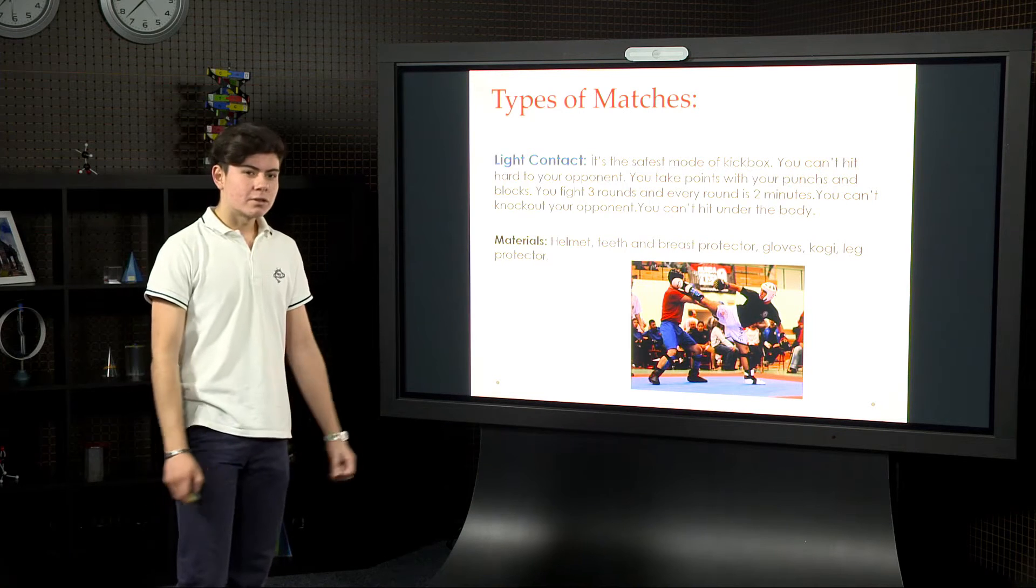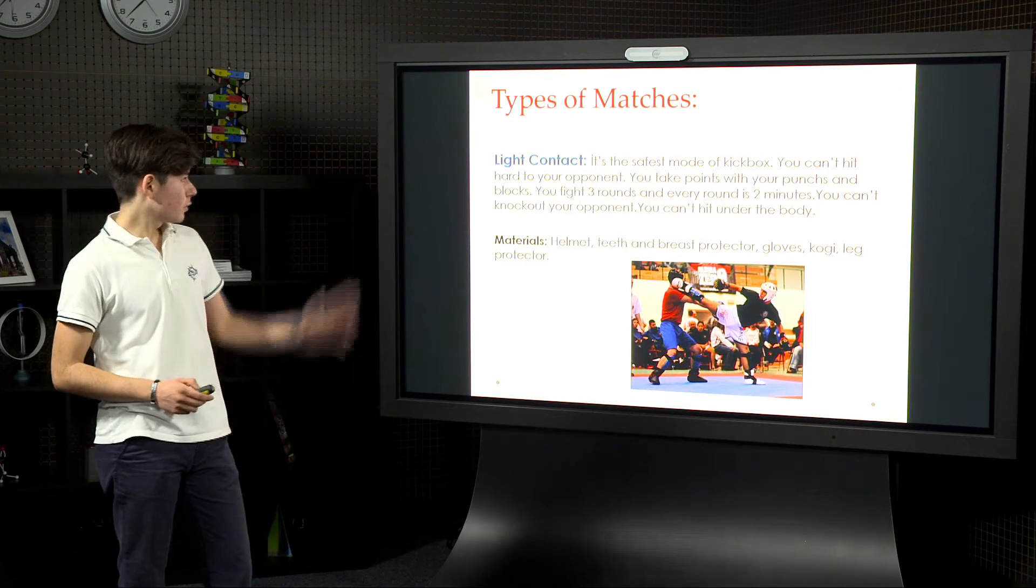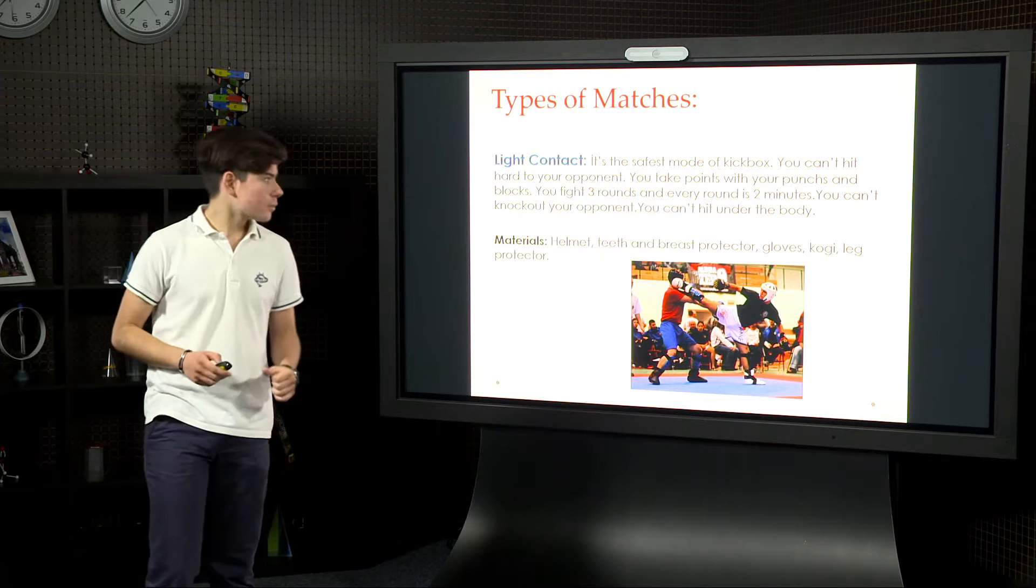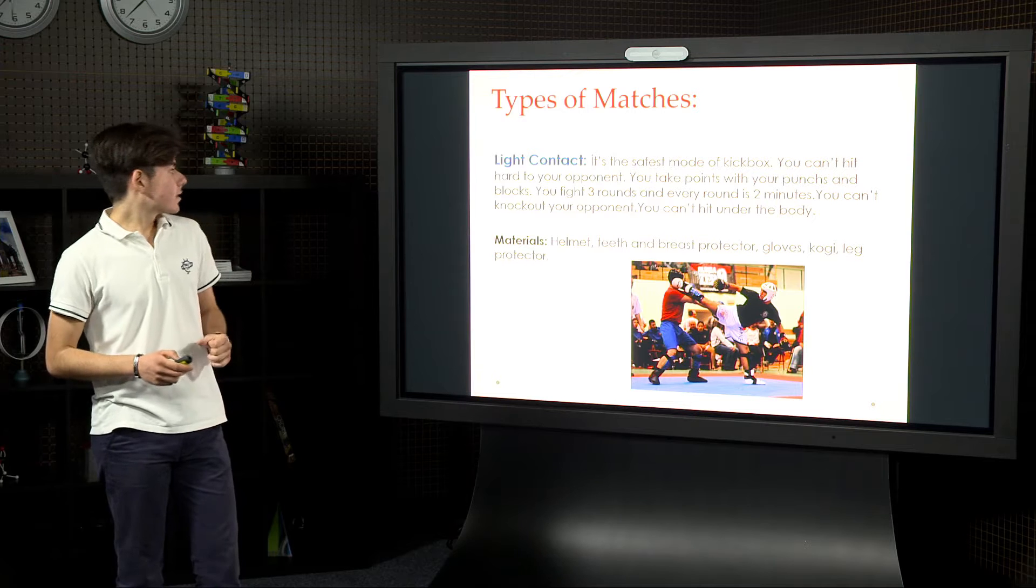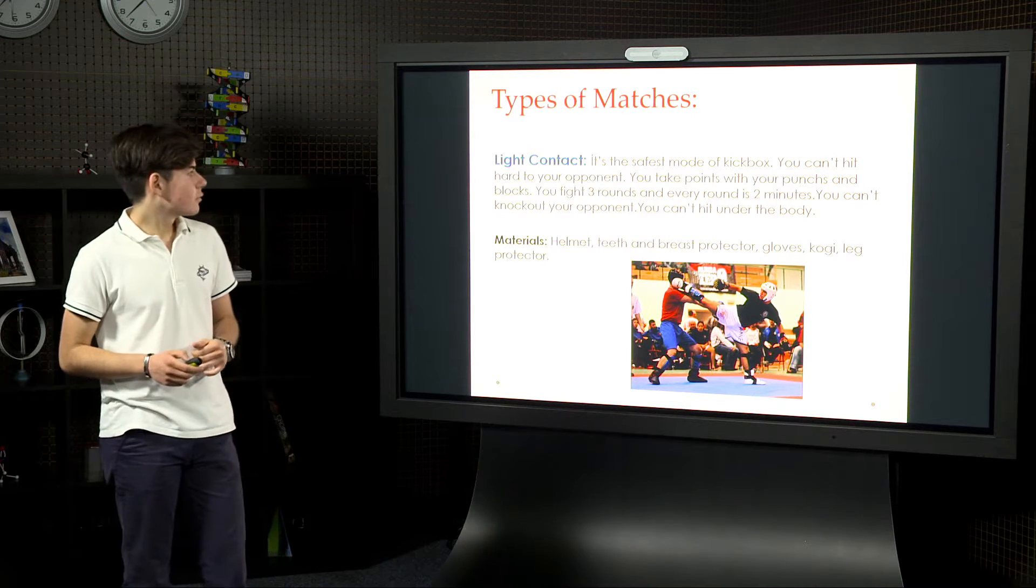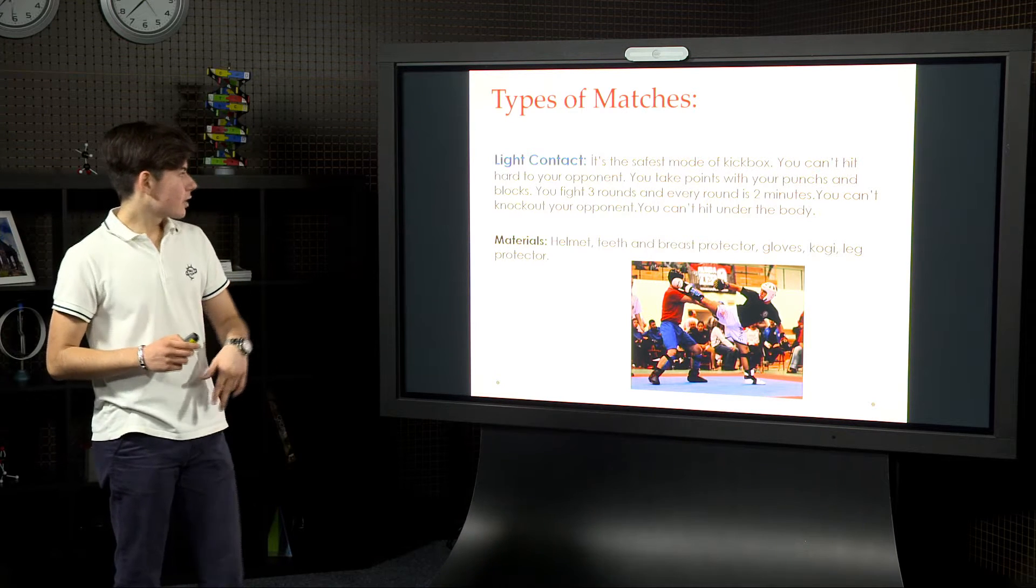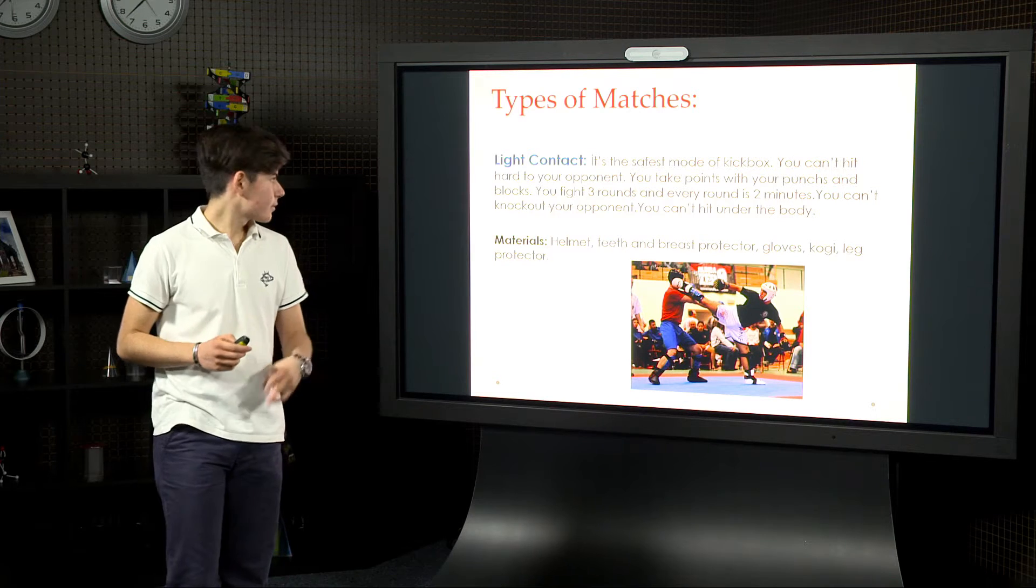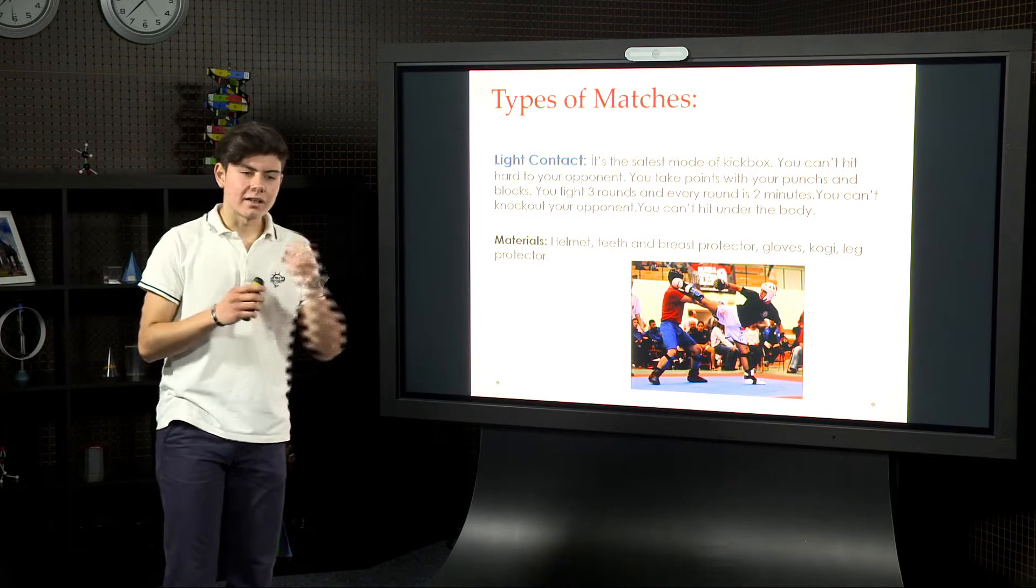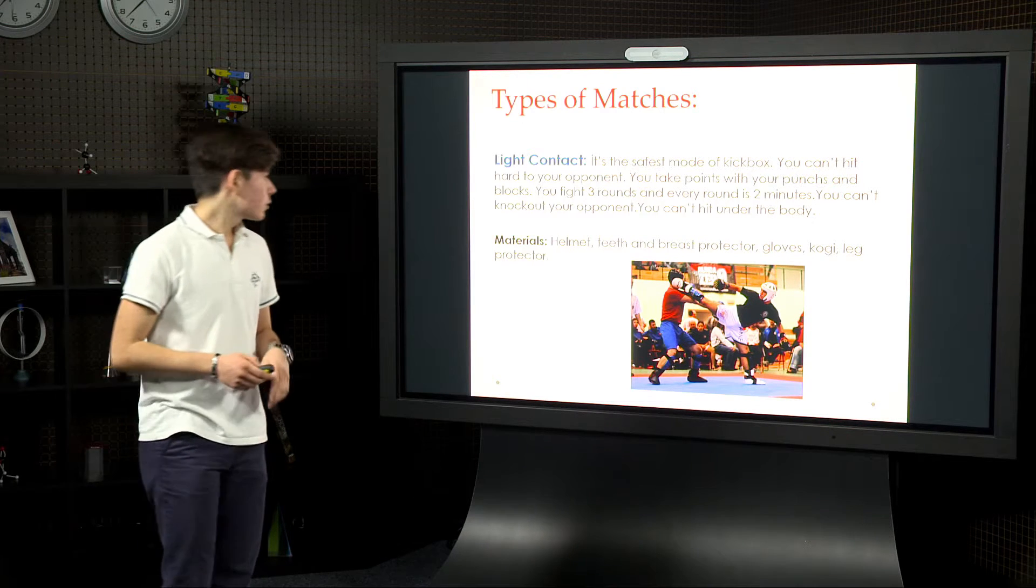Today I want to introduce you to types of matches. First of all, light contact. It's the safest mode of kickbox. You can't hit hard to your opponent. You take points with your punches and blocks. You fight 3 rounds and every round is 2 minutes. You can't knock out your opponent because you can't hit hard, so it's the safest mode of kickbox.